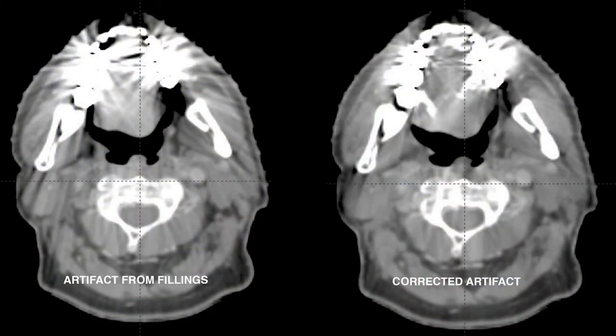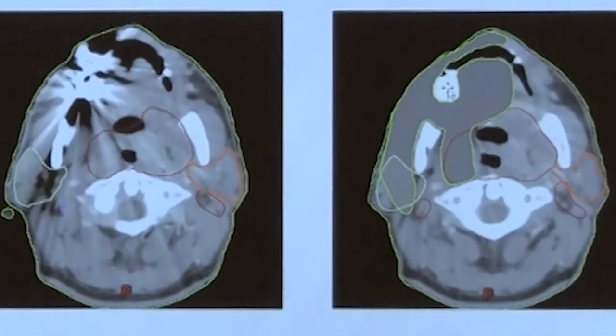Another common cancer we treat in our department is head and neck associated diseases. An issue common with that is the metal in people's mouths — fillings and so on — which are picked up quite obviously when we do the CT simulation. They are problematic because you can't delineate the tumor volume due to the artifact created. This artifact has been contoured out and overridden with a density so planning can initiate based on a corrected image.